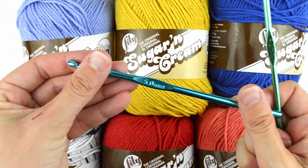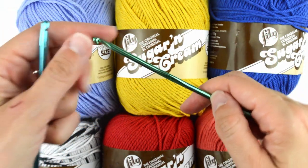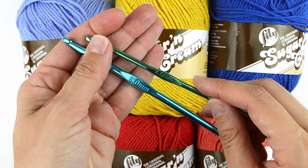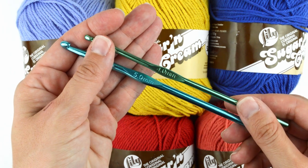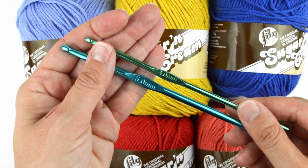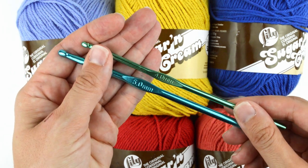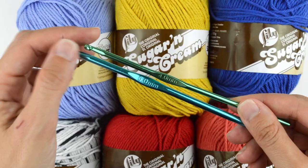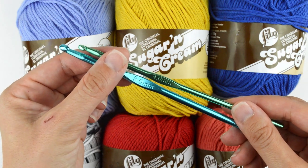You'll also need a crochet hook. With I-cords, I recommend going one full hook size smaller than what's recommended on the yarn label. This will give you a tighter stitch, which is better if you're going to be putting any kind of weight or tension on your cord, like using it for a drawstring or strap. Since my yarn label recommends a five millimeter hook, I'm going to be using a four millimeter hook instead.